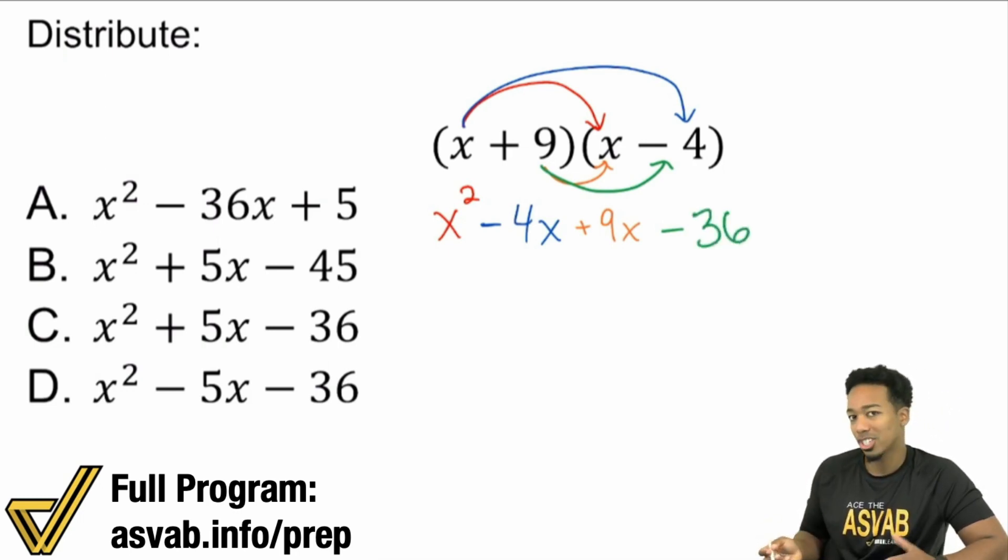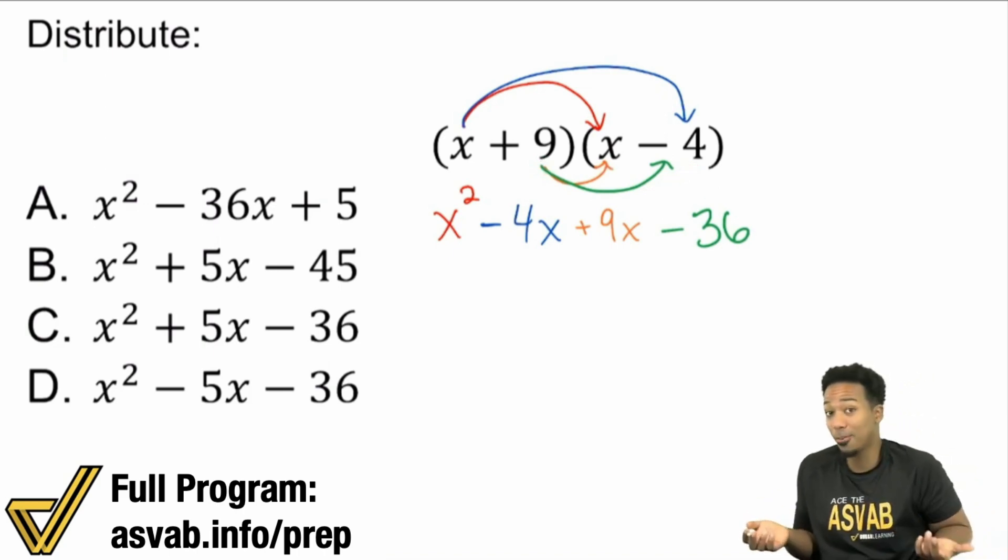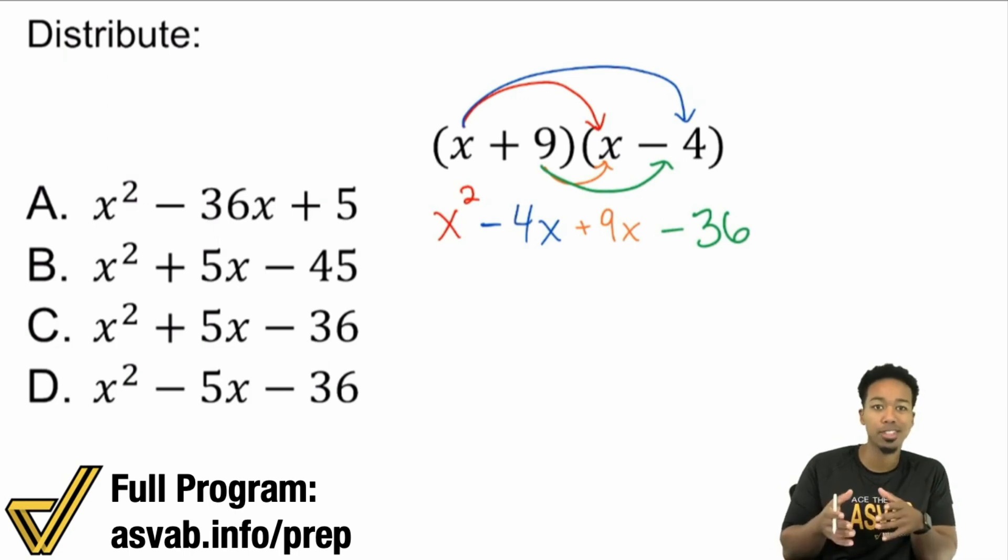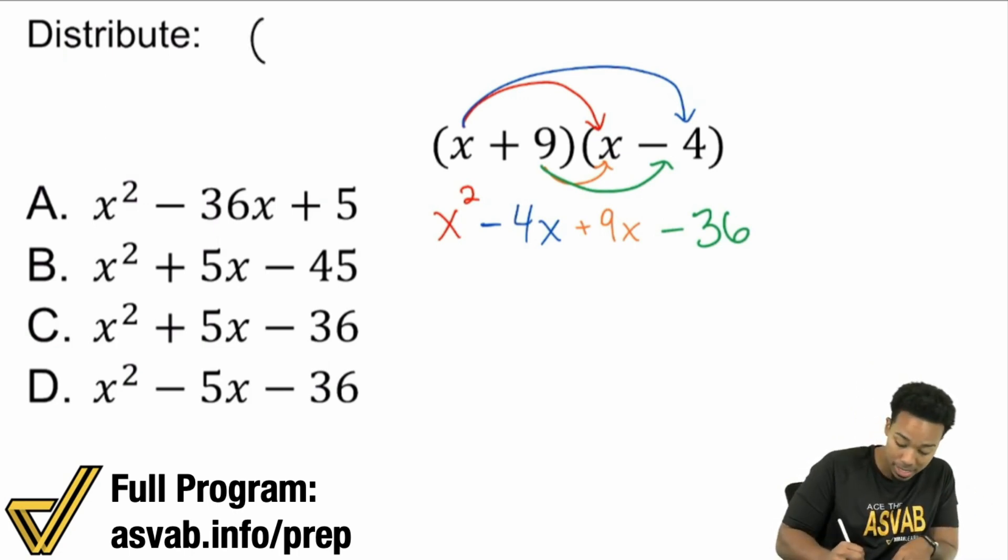So if you notice, we actually just did FOIL. Notice this. Look. First, outside, inside, last. We just did FOIL. But if you stick to the idea of, again, multiplying everything from one parentheses with everything from the other, you can change the problem up. You can get something like this. You can get something like this, seriously, and handle it like a boss.